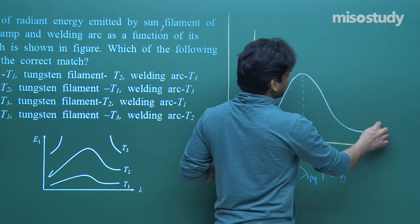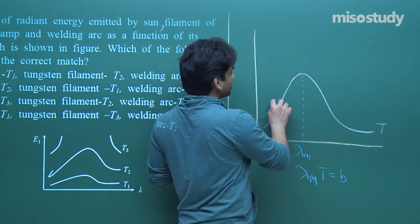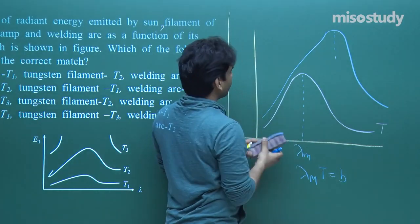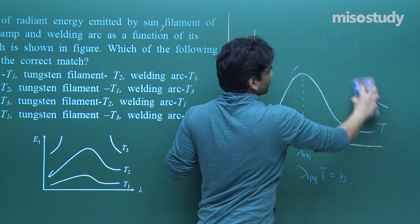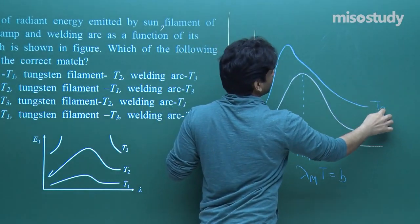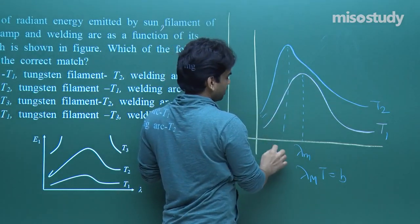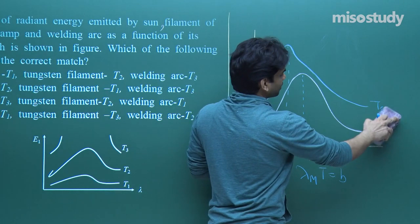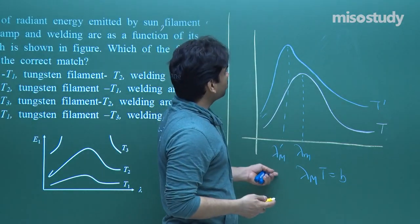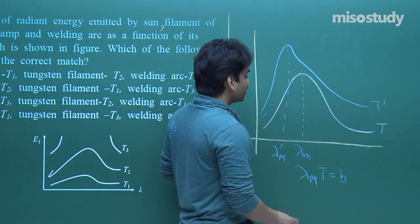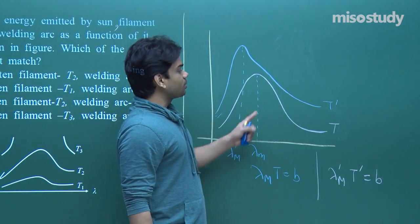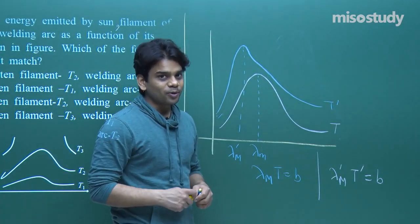If we consider another curve at a different temperature, let's say temperature T and T dash. Here lambda dash_m is smaller, so temperature T dash will be higher compared to temperature T. We can write: lambda_m dash is smaller, so temperature T dash has to be higher, because lambda_m times T equals B is constant. As lambda reduces, temperature T moves higher.